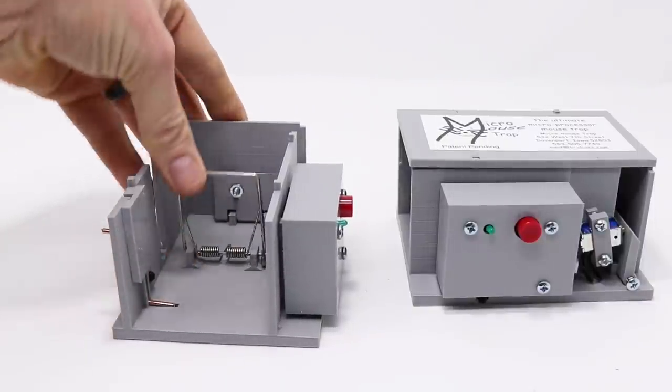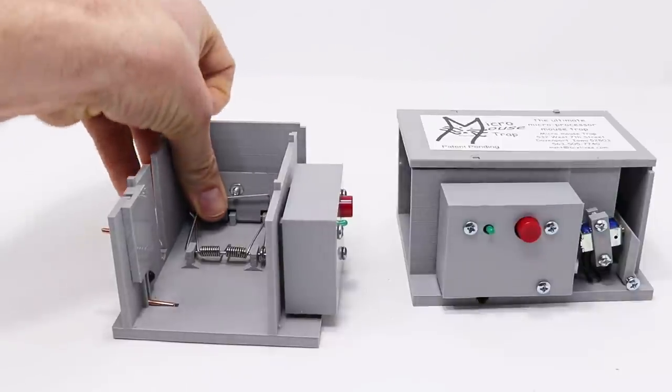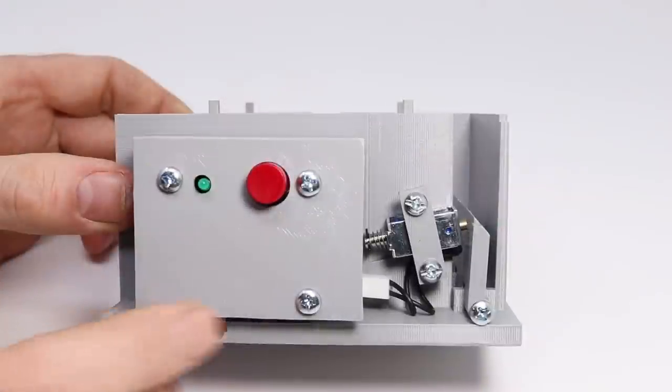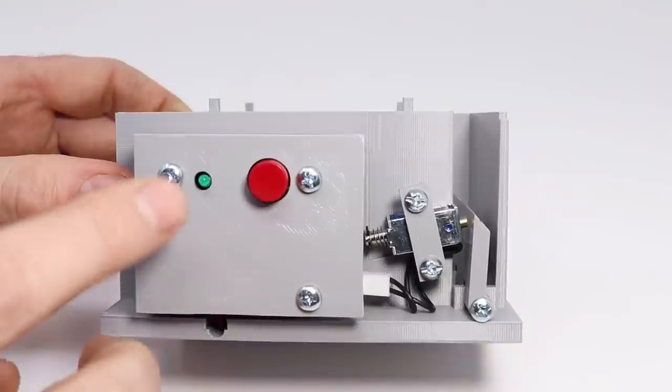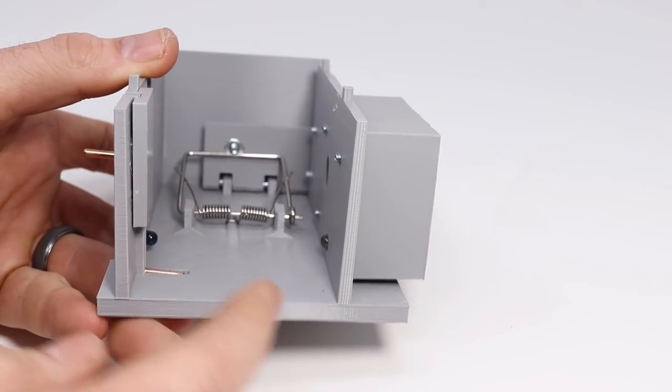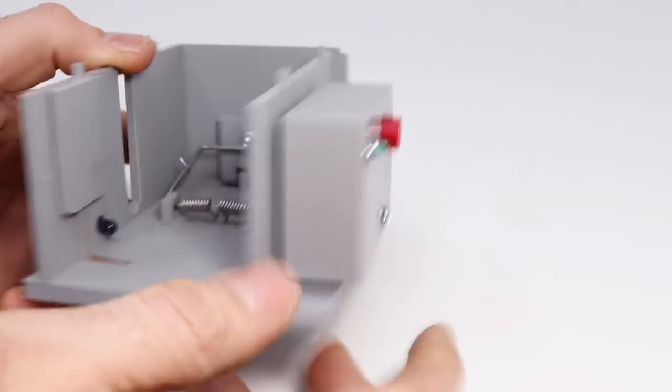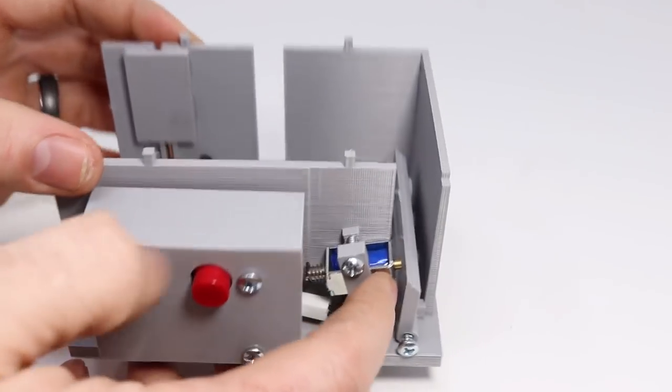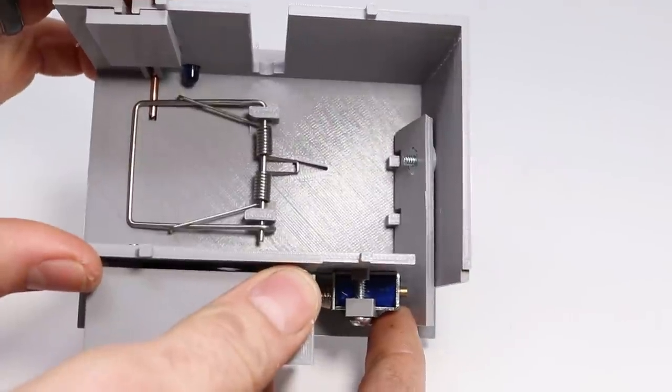To set it, you pull this back. There's a little latch right here. On the side we have a red power button and a green light that cycles when the trap is activated and ready to catch a mouse. Inside are two sensors. When the mouse goes in there and breaks the light beam, it triggers a rod which pushes the latch and sets off the kill bar.